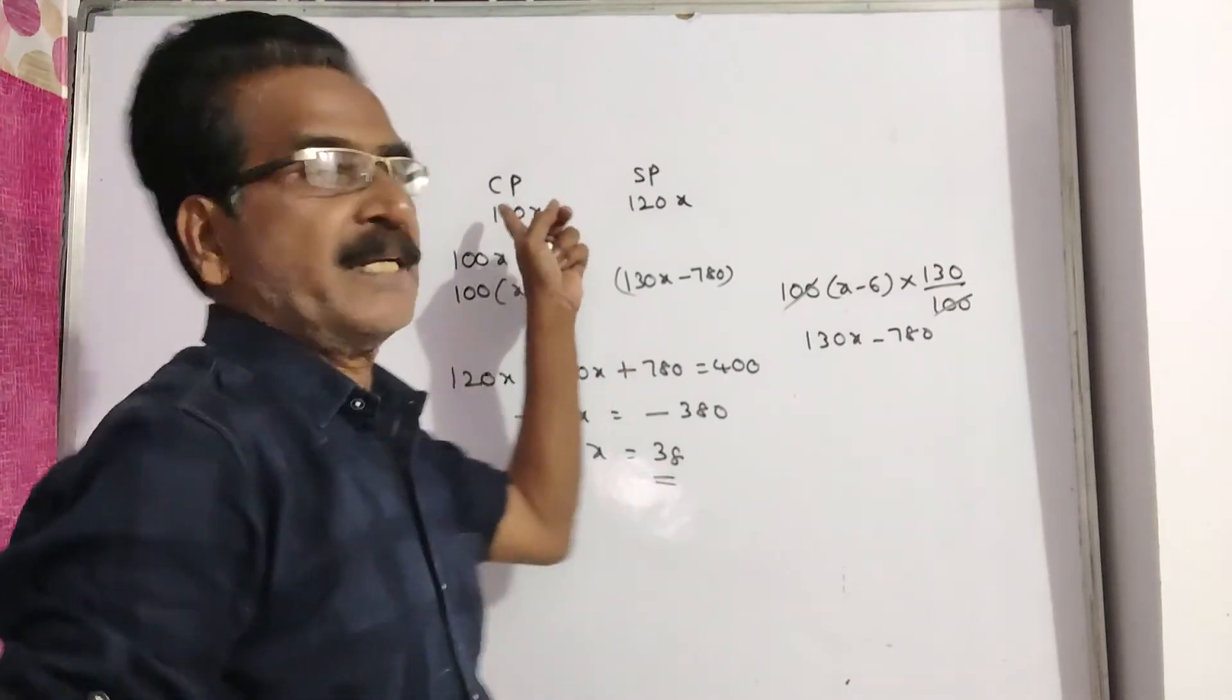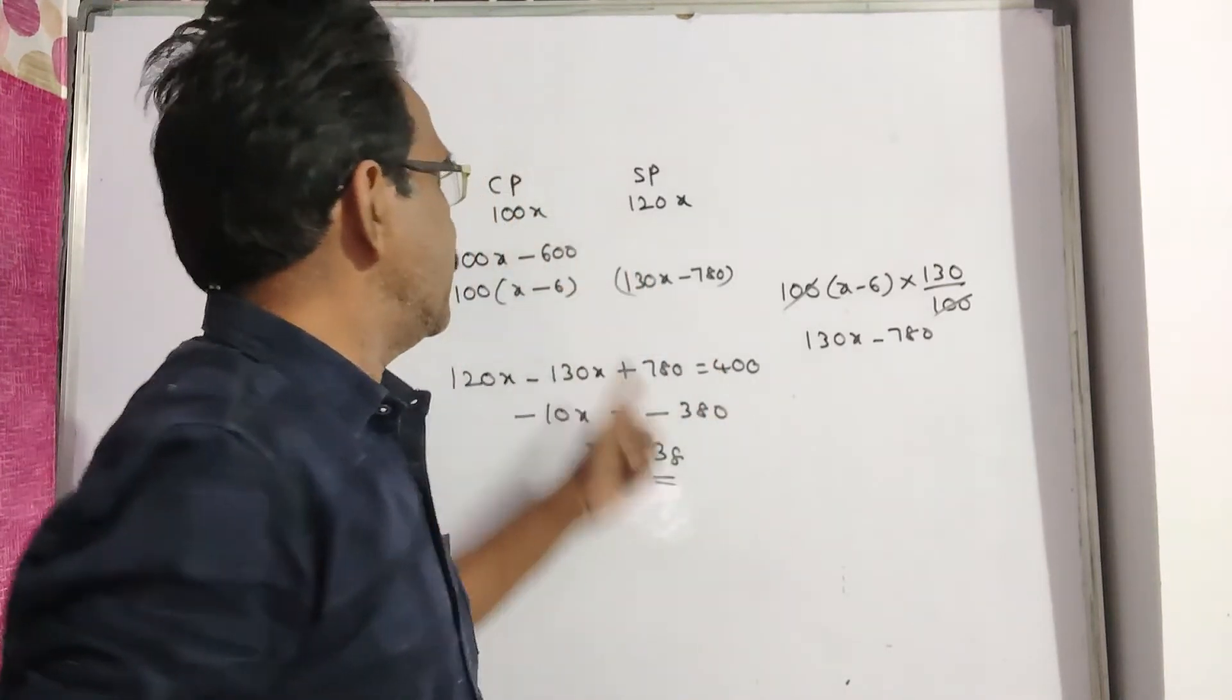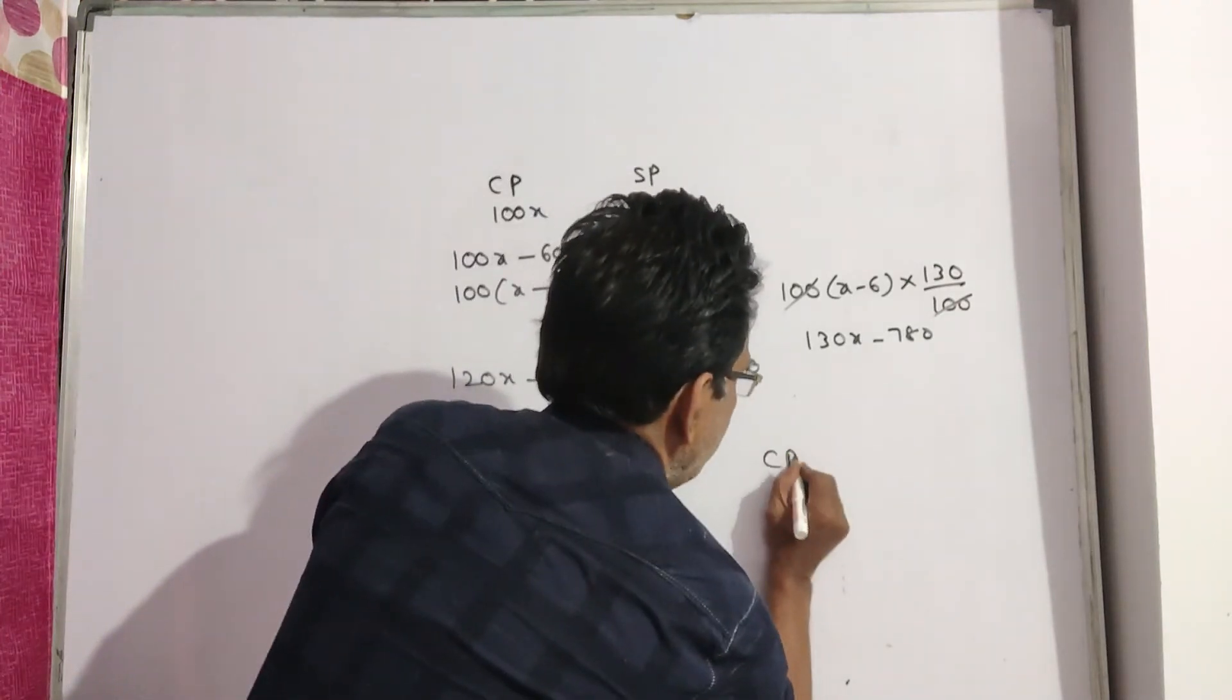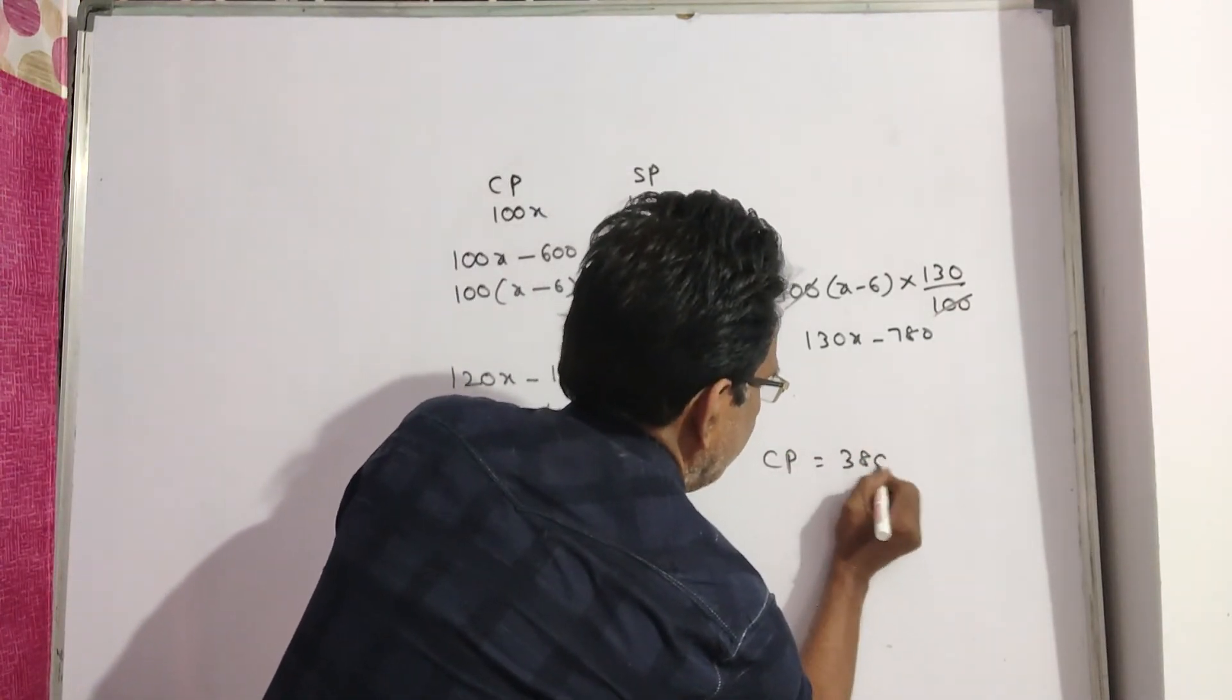x = 38 means cost price will be 100 into 38, which is 3800. Cost price will be 3800 friends.